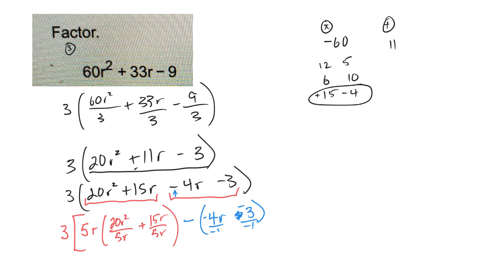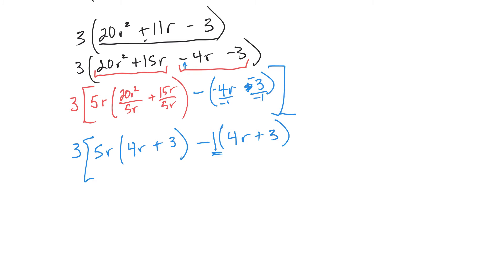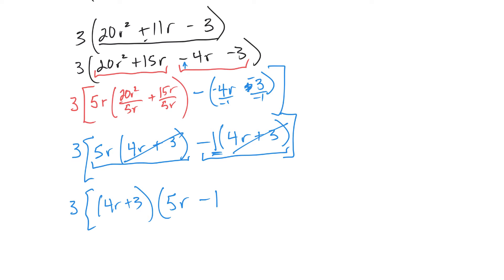So inside the square brackets I have 5R times (4R plus 3) minus 1 times (4R plus 3). Since there's no number out front on the second term, I make sure to put a 1 there. Now 4R plus 3 is common to both terms, so I factor it out, leaving 5R minus 1. The result is 3 times (4R plus 3) times (5R minus 1). I can now drop the square brackets.